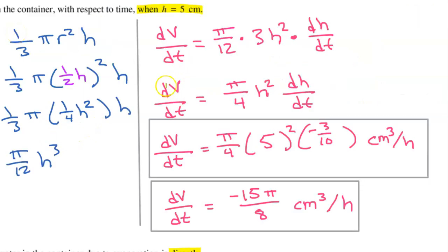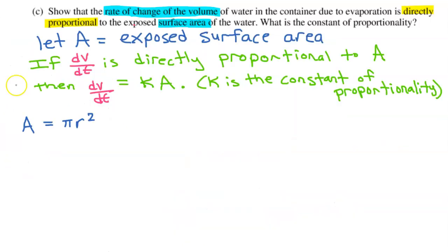Looking back at Part B, I see that we found this equation for dV/dt. I'm going to come back to this in a minute, but for right now, pay attention to the fact that h is our only variable. In this area formula, we have r. We don't want r, we need an h. So what are we going to do?